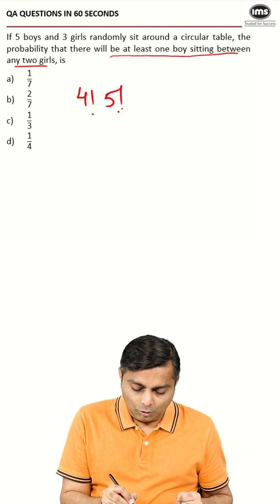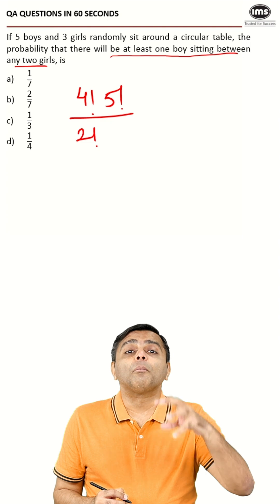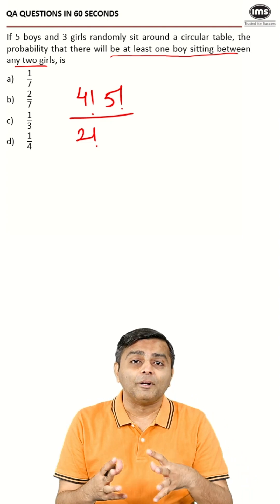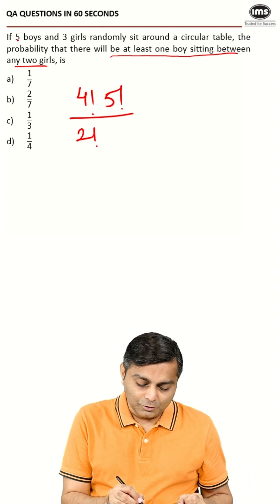So it is 5 factorial over 2 factorial. Correct, now this is the number of ways for the event to happen. Favorable case, divide by the sample space. Sample space is what?